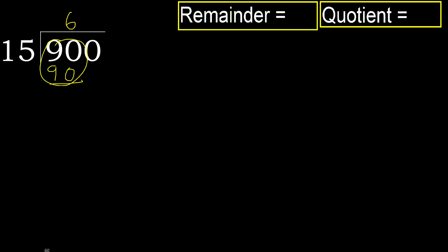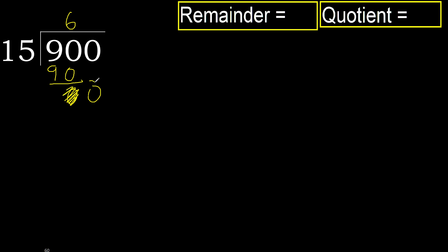Subtract: 90 minus 90 equals 0. Next, bring down the 0. 0 is less.